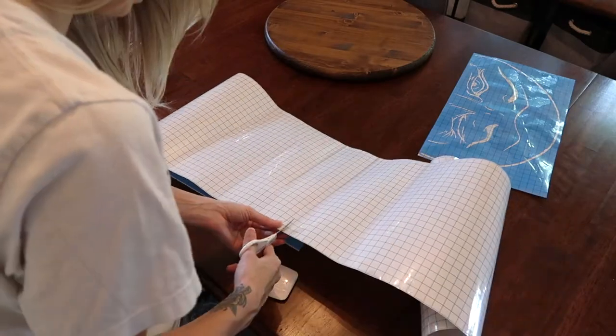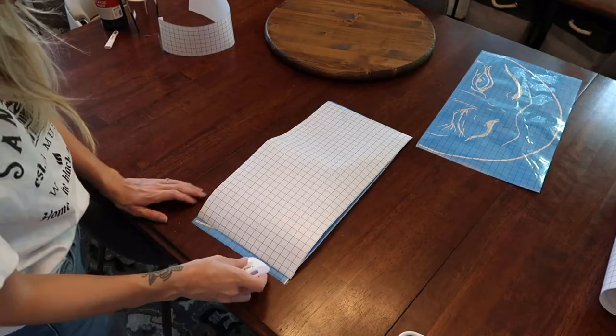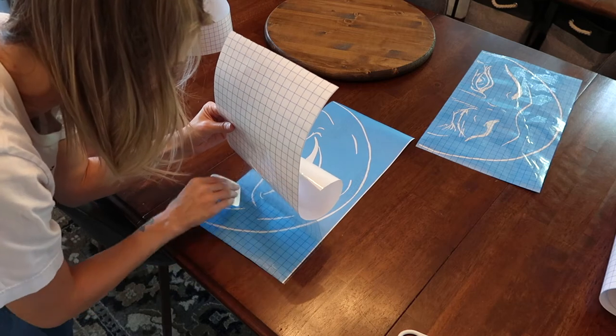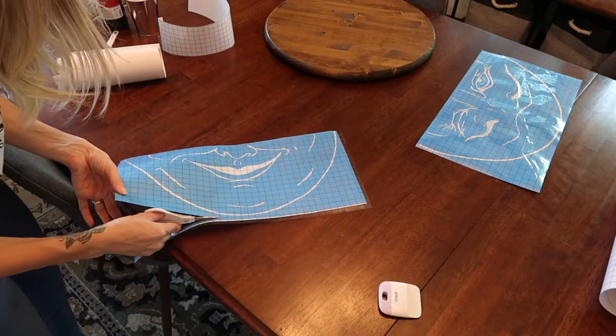Grab your transfer tape and cut it to size for your stencils. Go ahead and get that placed on top of your stencil. This always takes a little bit of time, so just take your time with it, work all the bubbles out and then cut off the excess.